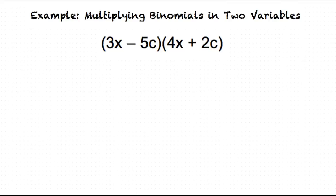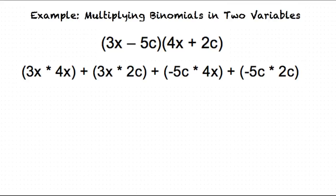Outer, Inner, Last. This gives us 3x times 4x plus 3x times 2c plus negative 5c times 4x plus negative 5c times 2c.